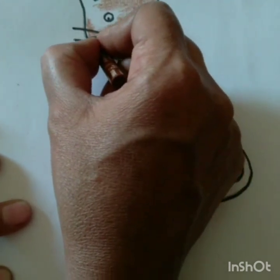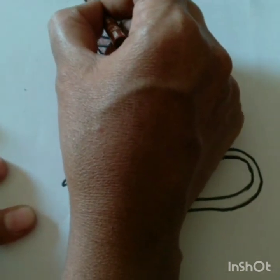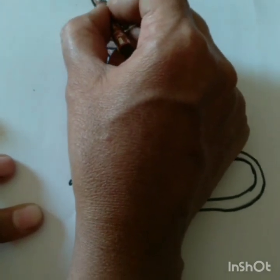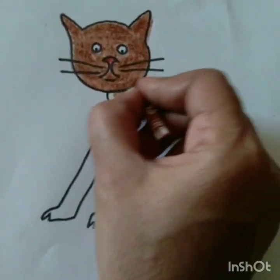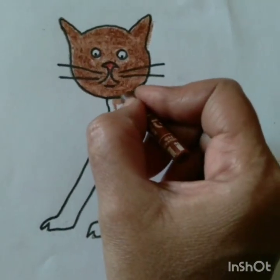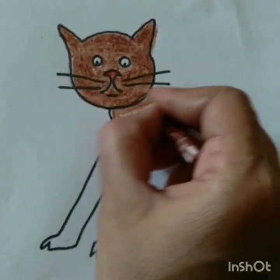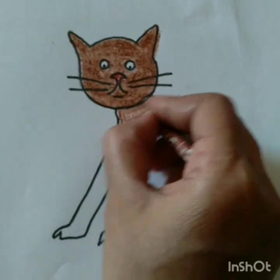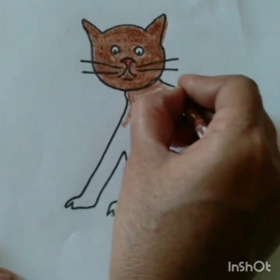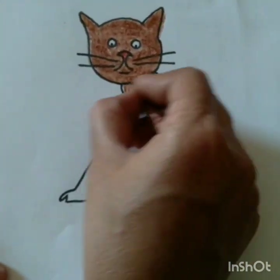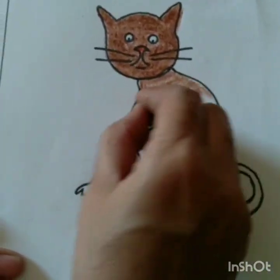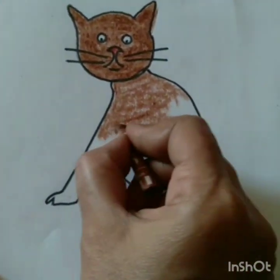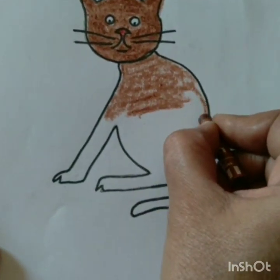Children, now we are coloring its fur with brown color. Children, cats' fur is so smooth. So when we touch this fur, we feel so smooth, na?